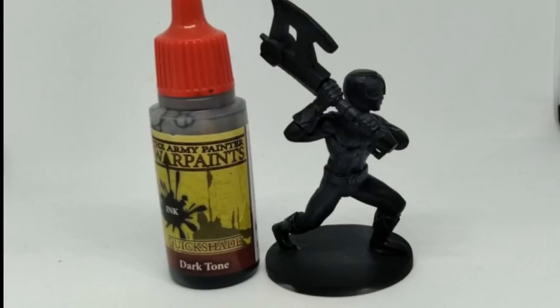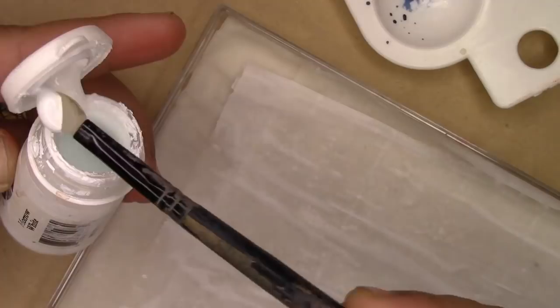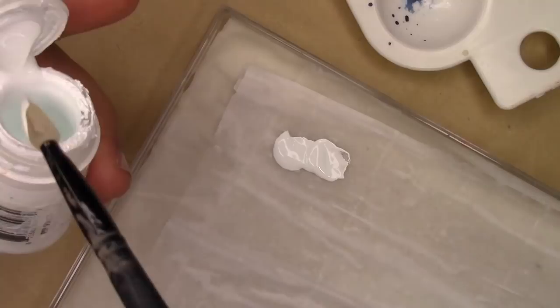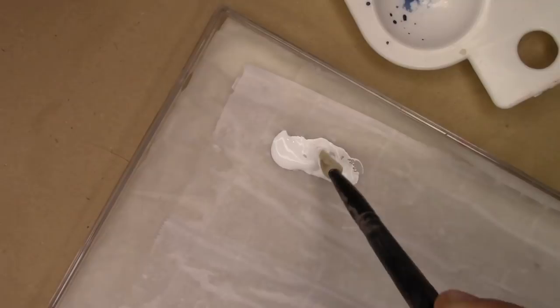Now that all the base colors are done, we get to the most intense part of painting these miniatures: painting the white. There's a point on every miniature I paint where the model looks like a bit of a mess. You'll hit that point here, and I'm telling you this because I don't want you to get discouraged when you reach this point.